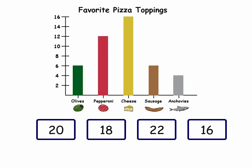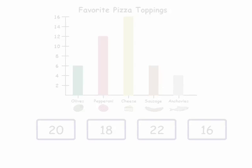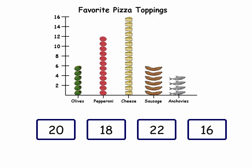Two classes took a poll about their favorite pizza toppings. Here are the results. How many students altogether like cheese and olives on their pizza? Good job. Nice try! Let's look at the graph this way. How many students altogether like cheese and olives on their pizza? Outstanding! Now try this one.